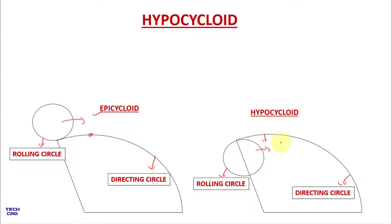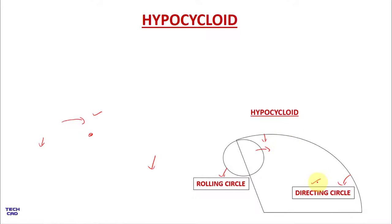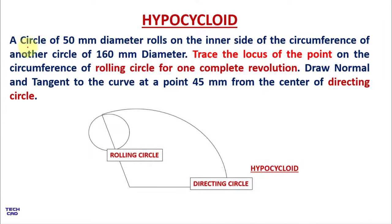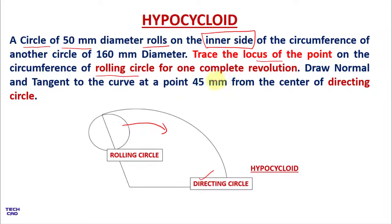The rolling circle rolls on the inner circumference of the directing circle. The question is: a circle of 50 mm diameter rolls on the inner side of the circumference of another circle — the directing circle — which has a diameter of 160 mm. Trace the locus of a point on the circumference of the rolling circle for one complete revolution, and make the normal and tangent to the curve at a point 45 mm from the center of the directing circle, which is O.